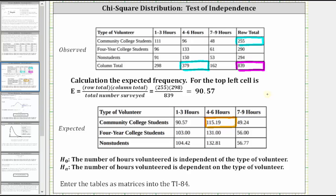The next step is to enter the observed values and expected values into the TI-84 as matrices. We don't include the row and column totals, so both will be three by three matrices. We will enter the observed values in matrix A and the expected values in matrix B.